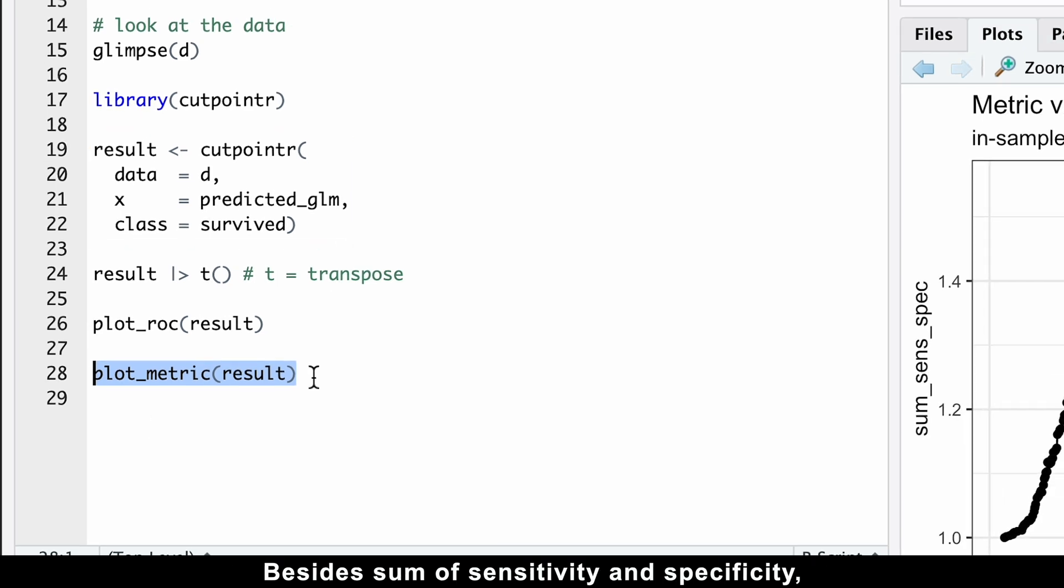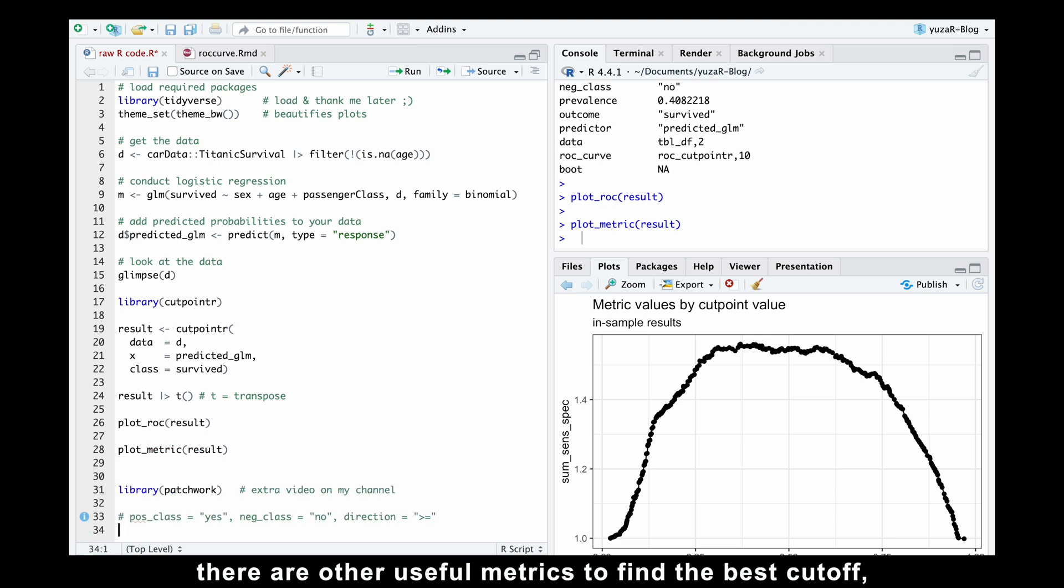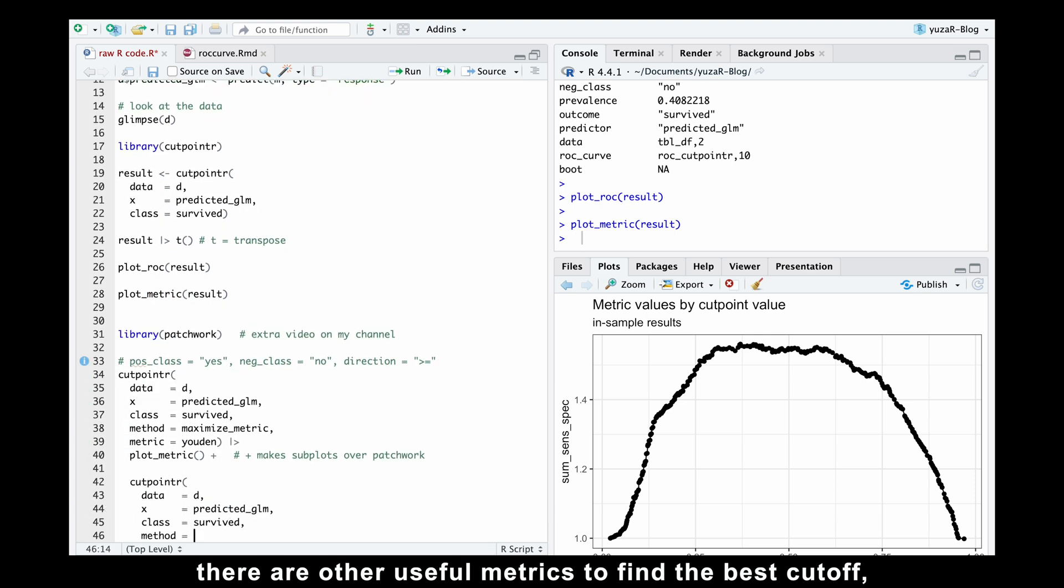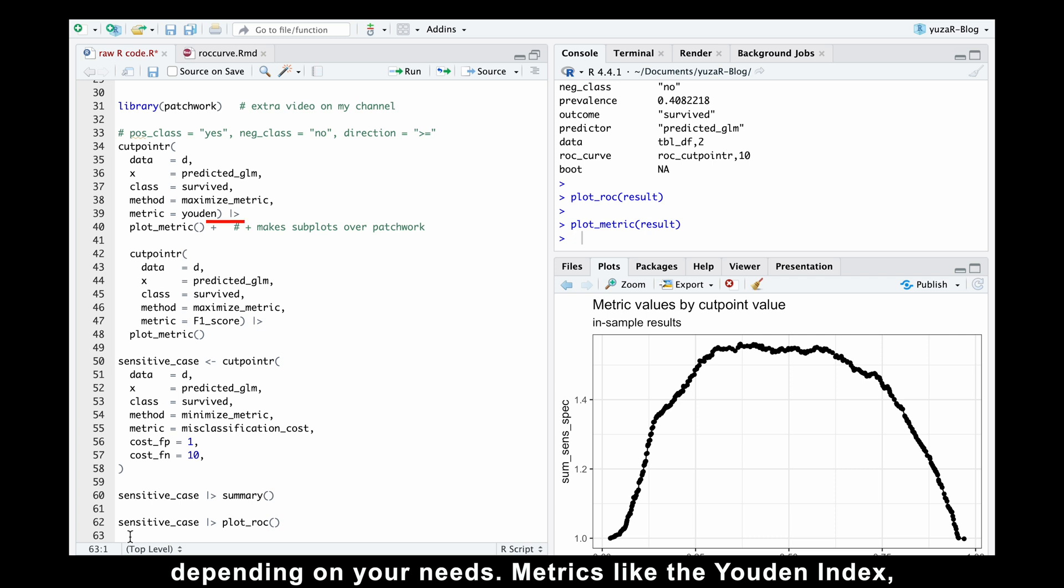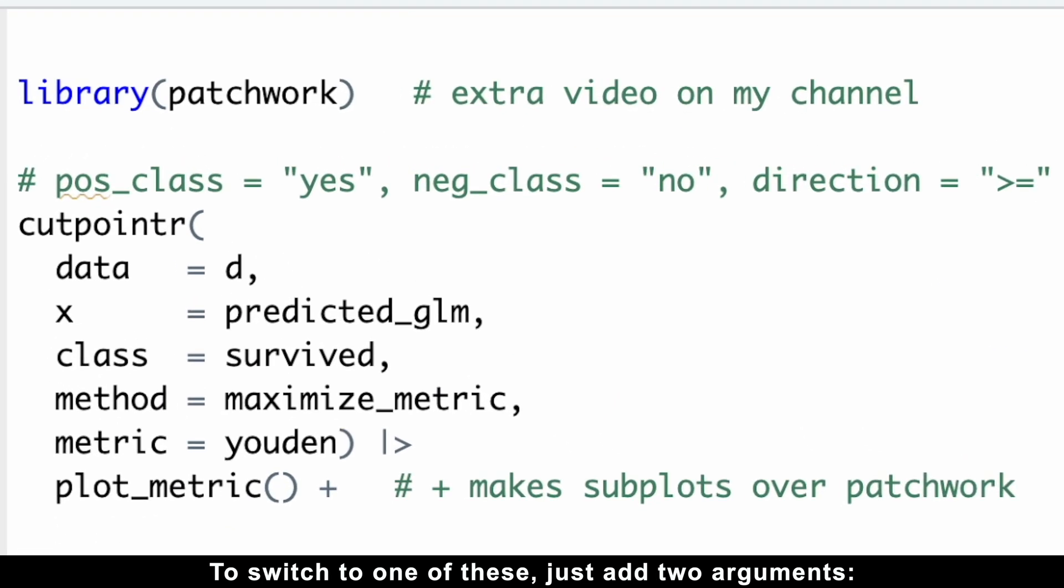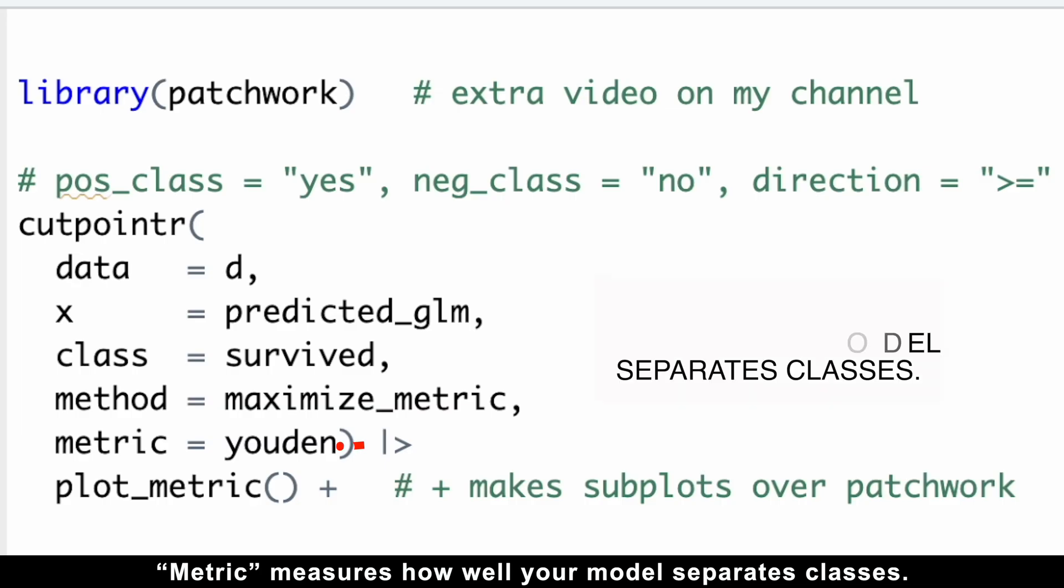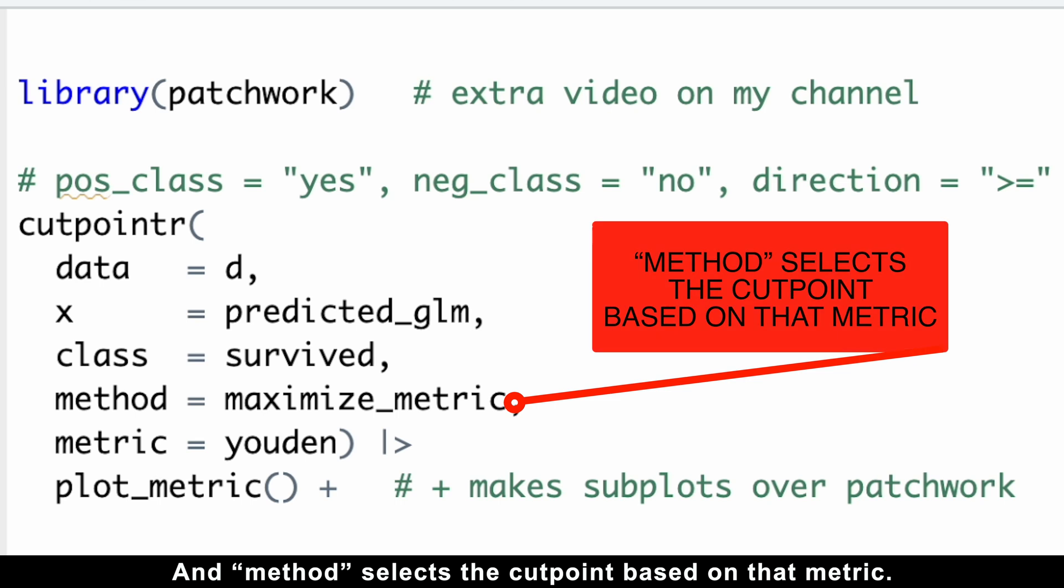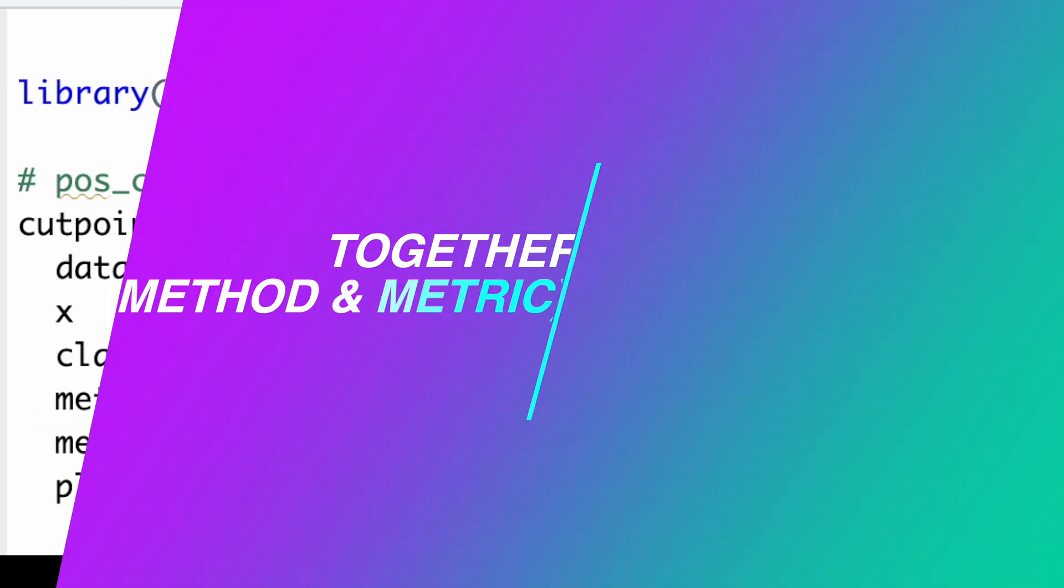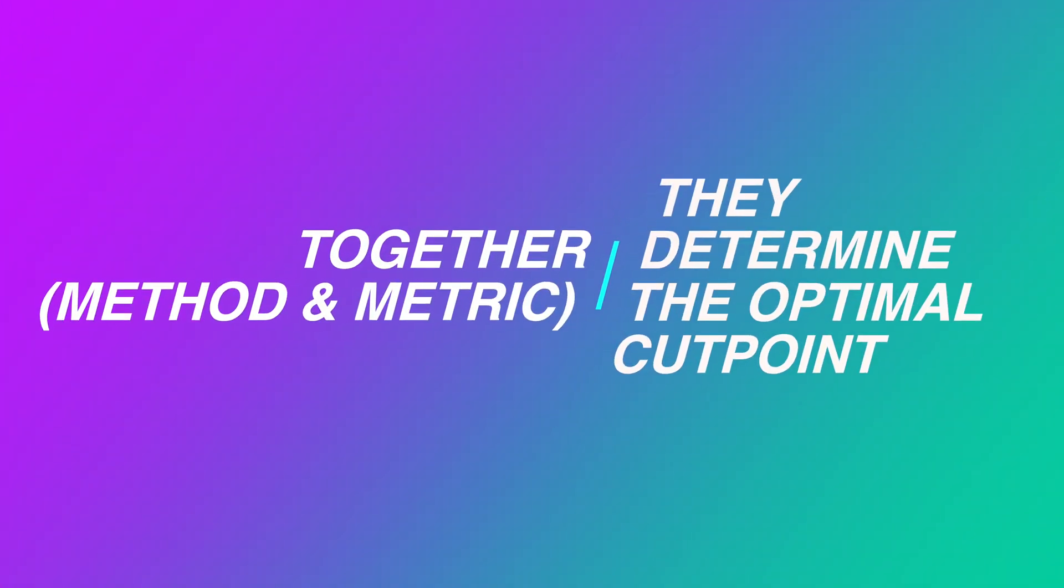Besides sum of sensitivity and specificity, there are other useful metrics to find the best cutoff, depending on your needs. Metrics like the Youden index, F1 score, or misclassification rate can be more effective in different situations. To switch to one of these, just add two arguments: method and metric. Why these two? Metric measures how well your model separates classes, and method selects the cutpoint based on that metric. Together, they determine the optimal cutpoint.